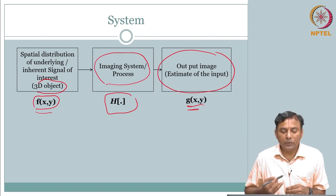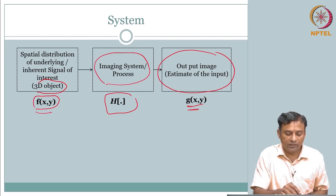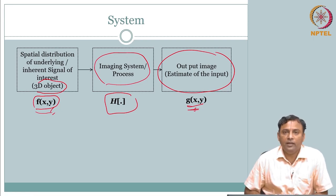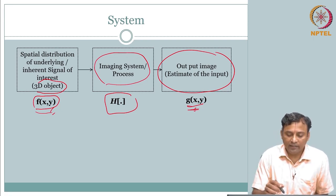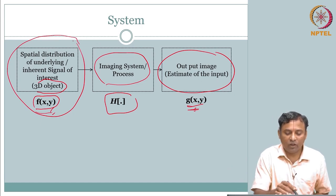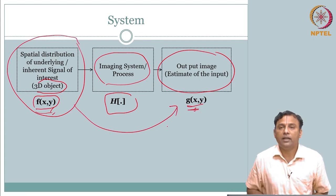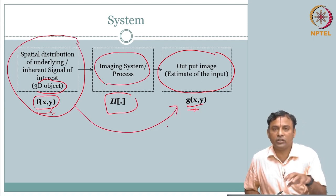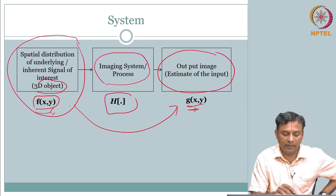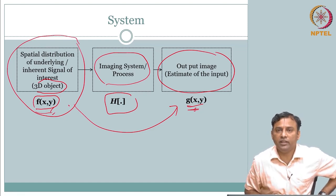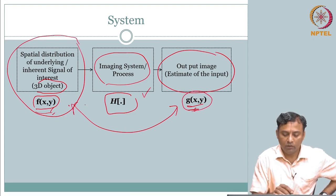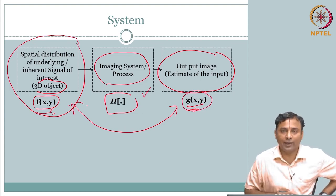What is the system? At the broadest level, it is something that operates on an input to give you another signal - it operates on an input signal to give an output signal. In our case, it is going to be a spatial distribution at the input and a spatial distribution at the output. The objective of the system is to make sure the output is as close as possible to the input or the unknown underlying distribution.